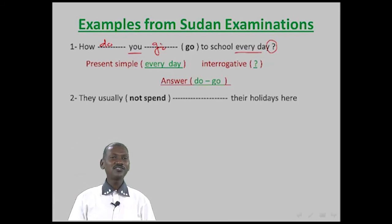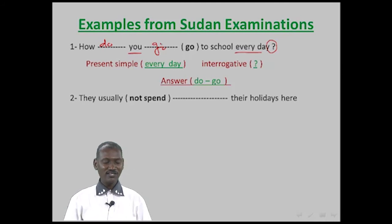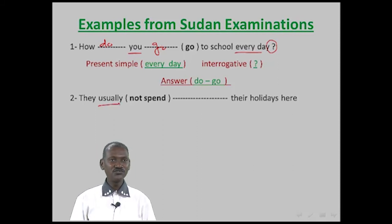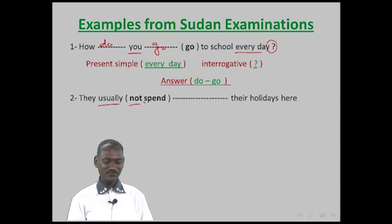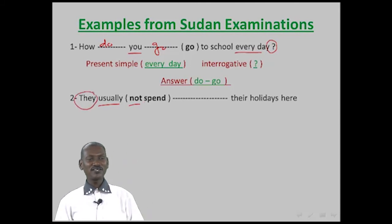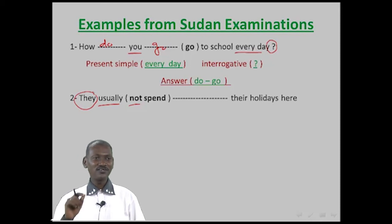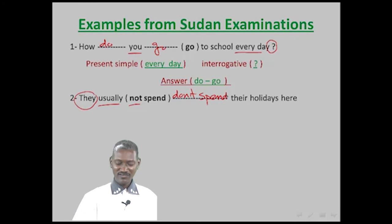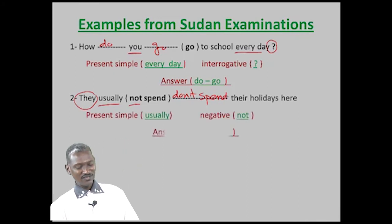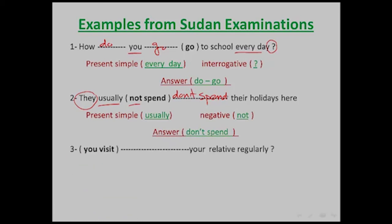Example two: 'They usually not spend their holidays here.' It is Present Simple because of 'usually', and negative because of 'not'. The subject is 'they', so we use 'don't' + verb. Answer: 'They usually don't spend their holidays here.'